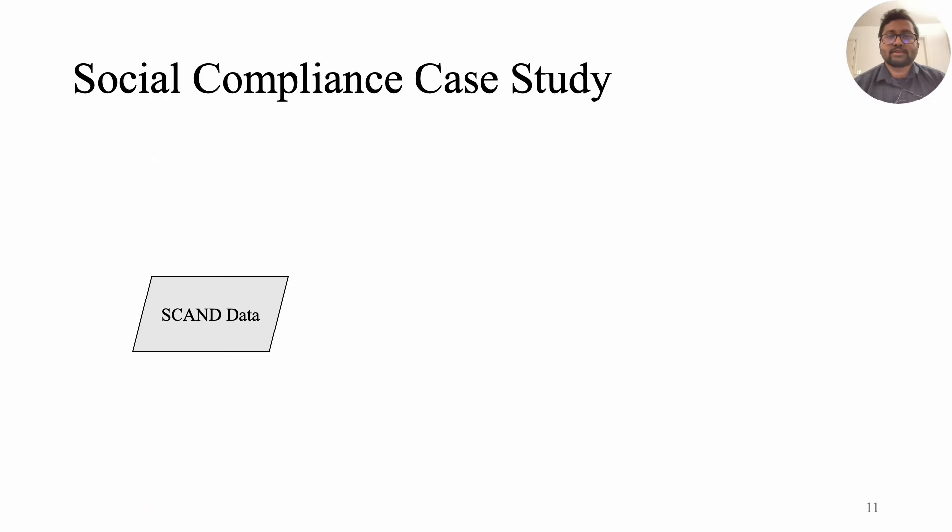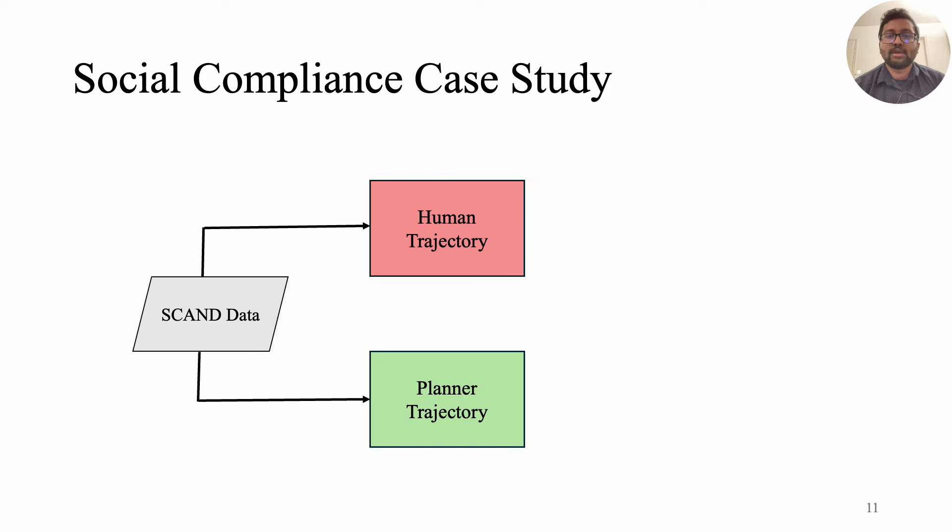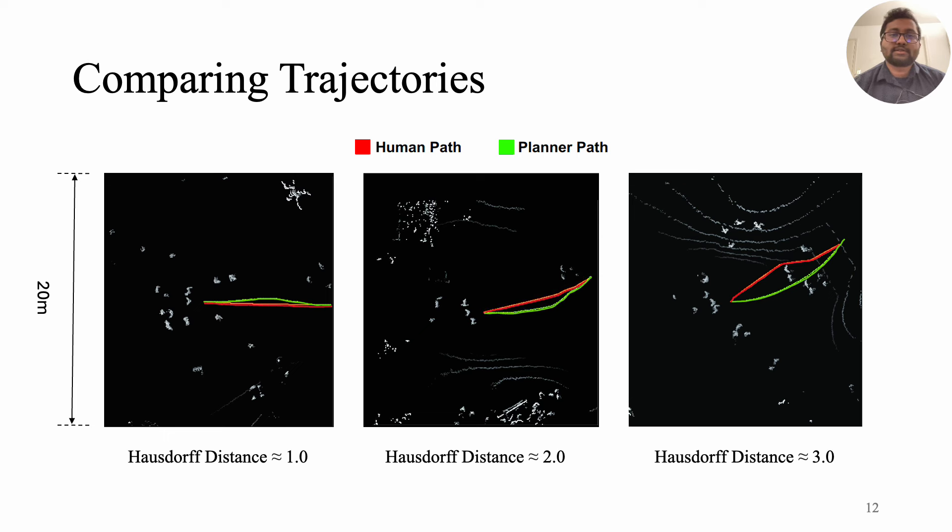We first run a social compliant case study on SCAND. For every time step, we get human trajectory and trajectory from a navigation planner. We compare both the trajectories using a distance matrix. In this case, we calculate Hausdorff distance between them. For better context, here are some visual comparisons of different Hausdorff distances.